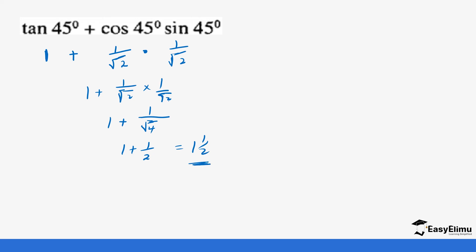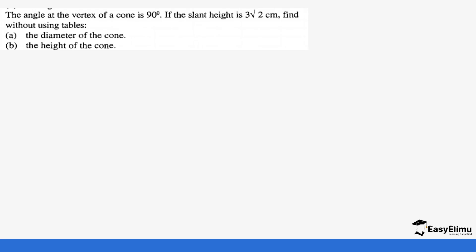So that's how we use the values from tan 45, cos 45 and sine 45 to get results without using the table. We can also use the same to calculate this next question: the angle at the vertex of a cone. So let's draw the cone.